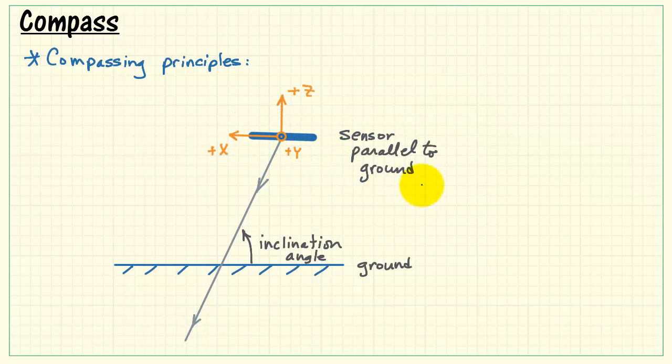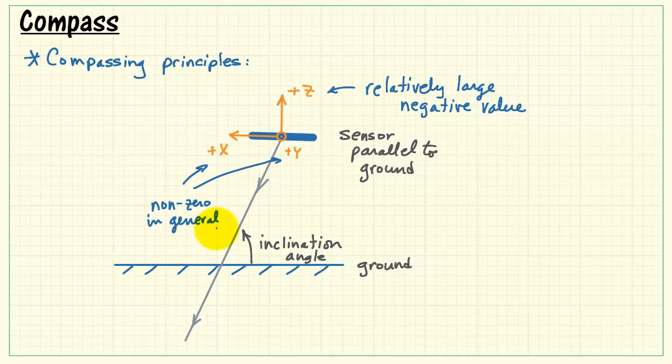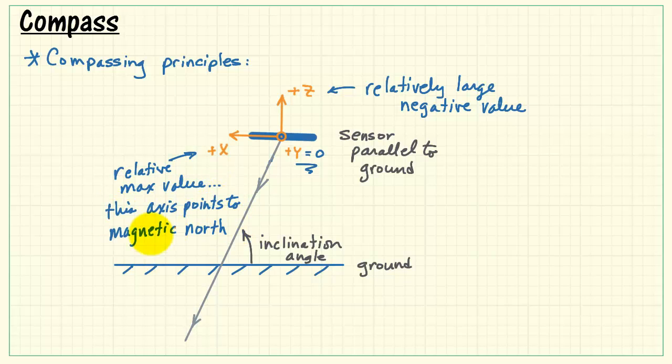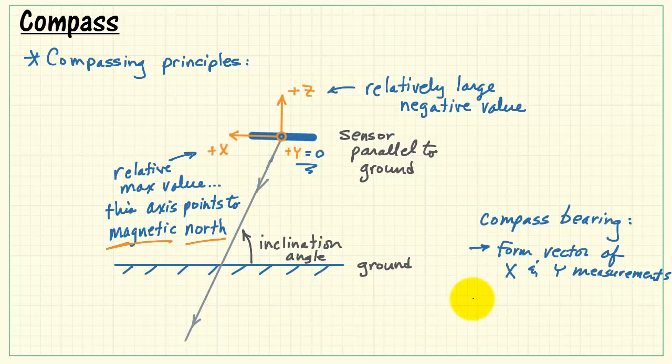Now when the sensor is parallel to the ground, then we see that we still have a fairly large negative value for Z, but we start to see some non-zero components showing up for both X and Y. So in general these would be non-zero values. However, the Y-axis, when it assumes zero, that tells us that X is at a relative maximum value, and that also then indicates that the compass X-axis points toward magnetic north.